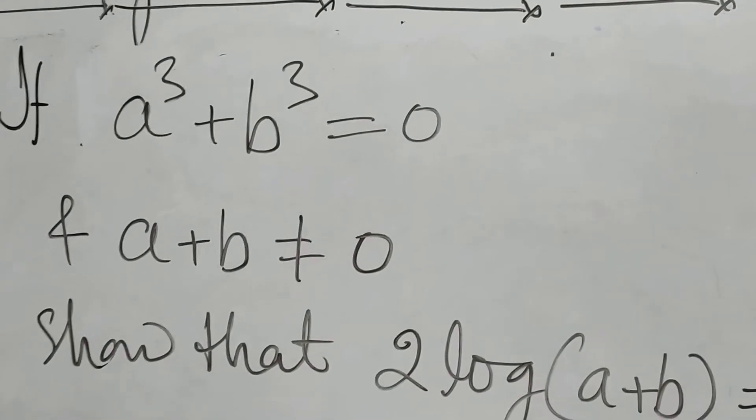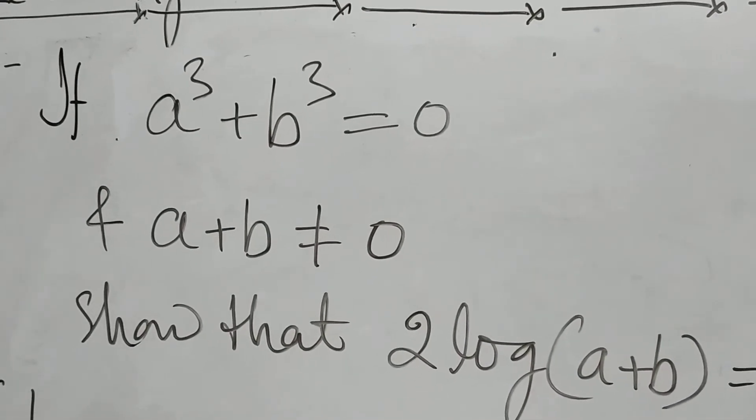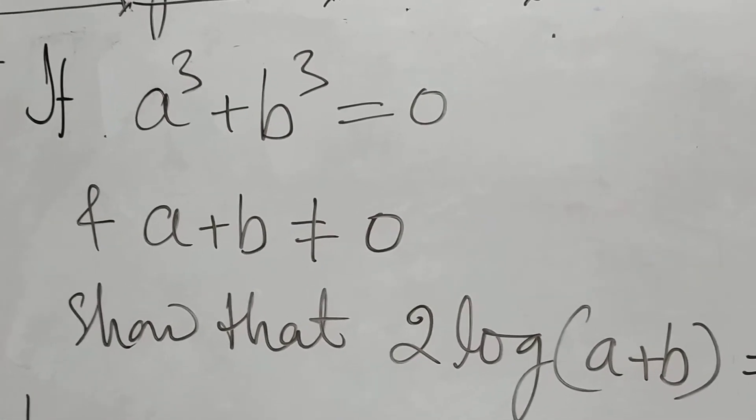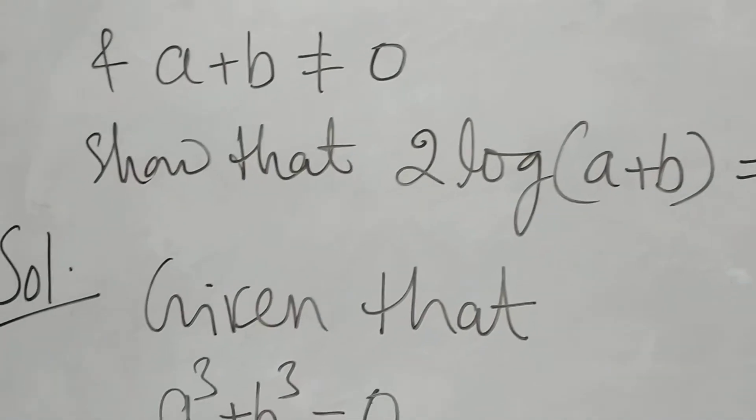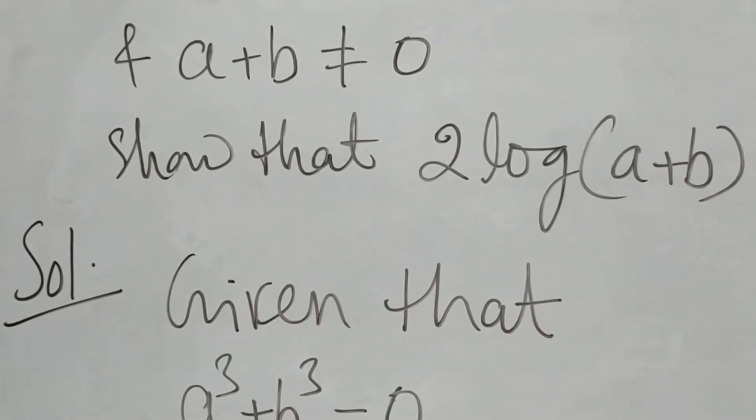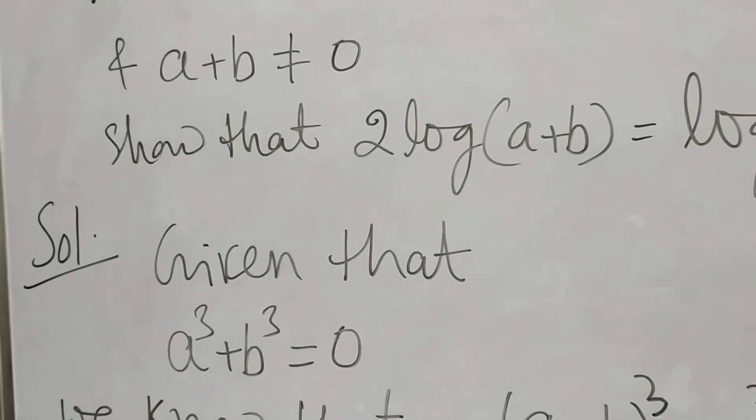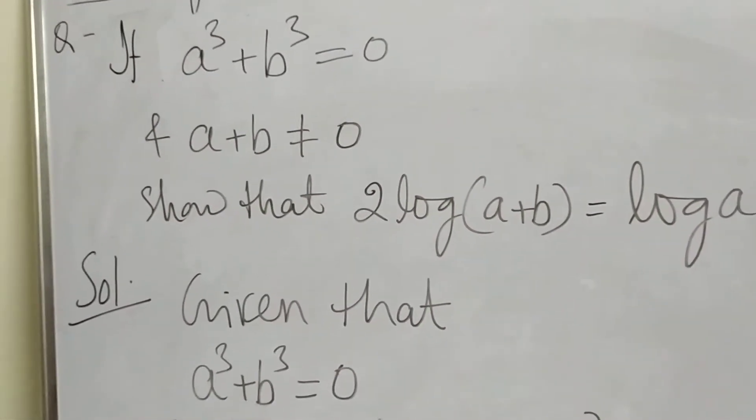a³+b³ gives some hint. I think you will understand. Solution: given that a³+b³=0, it is given, no problem.